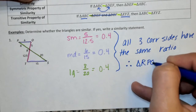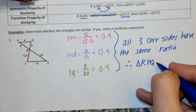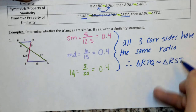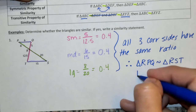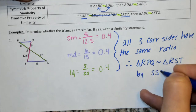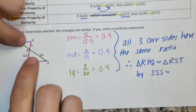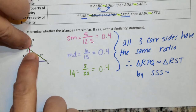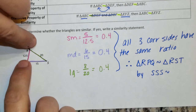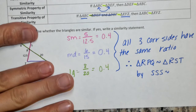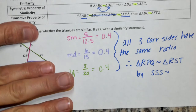Triangle RPQ is similar to triangle RST by side-side-side similarity. You can also see that we have vertical angles here, and vertical angles are congruent, so we could also use side-angle-side if we didn't want to use that third side.